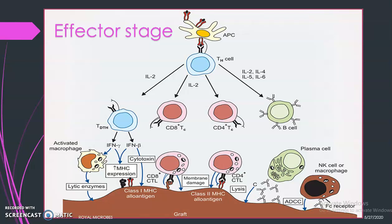In the effector stage, the main antigen-presenting cells in transplantation immunology are dendritic cells. The dendritic cell processes and presents antigen to the T helper cell population. As a result, various cytokines are produced: interleukin-2, interleukin-4, interleukin-5, and interleukin-6. Interleukin-2 mediates the delayed-type hypersensitivity reaction, activates CD8+ T cytotoxic cells, and activates a category of CD4+ T cytotoxic cells. Interleukin-2, 4, 5, and 6 activate B cells, resulting in B cell proliferation.